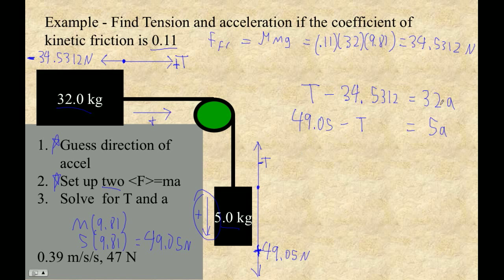So we have a system of equations. We don't know T, we don't know a. I'm going to solve it for a first and then substitute in and get T. If I just simply add these two equations together, see how there's a positive T and a negative T? T will always drop out of these things if it's a massless, frictionless pulley. So add these together and you get 49.05 minus 34.5312 equals 37a. I'm getting 14.5188 equals 37 times the acceleration. Now I'm going to divide by 37, and I get 0.3924 m/s².